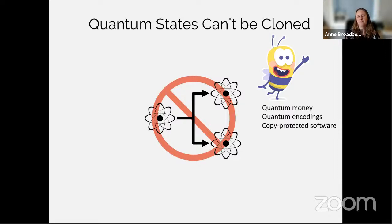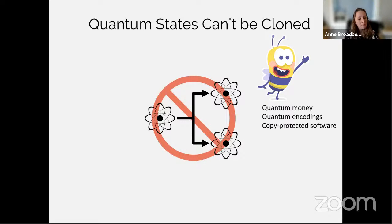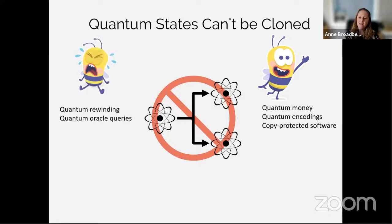What unclonability does for us as cryptographers is limit what the adversary can do. It sounds like a disadvantage, but as a cryptographer I see it as an advantage, because fundamentally the adversary can't copy. And if the adversary can't copy, you can do lots of really interesting things using quantum information that you can't do using conventional information. The consequences are widespread.